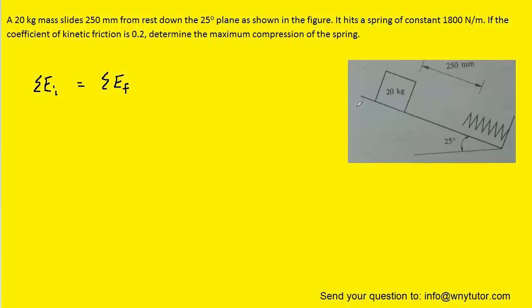Initially, we know that the block is simply resting at the top of this plane. And so the only energy that's present is going to be the gravitational potential energy, which we can symbolize as UG.